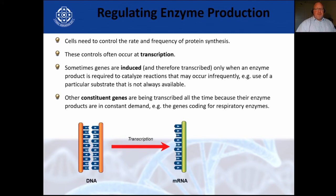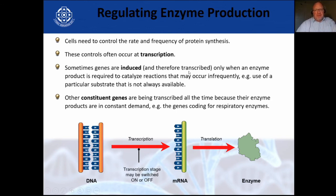We regulate enzyme production — cells need to control the rate and frequency of protein synthesis. These are controlled through transcription. Sometimes genes are induced or turned on and therefore only transcribed when an enzyme product is required — for instance, we're not going to make too much testosterone in a two-year-old child. Other genes are transcribed all the time because their enzyme products are in constant demand — for instance, genes coding for respiratory enzymes.